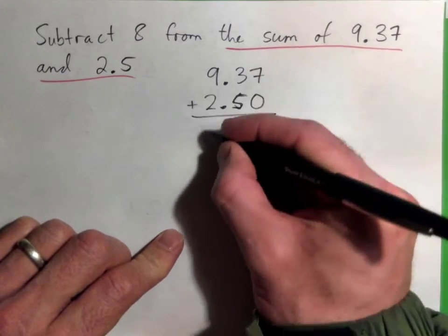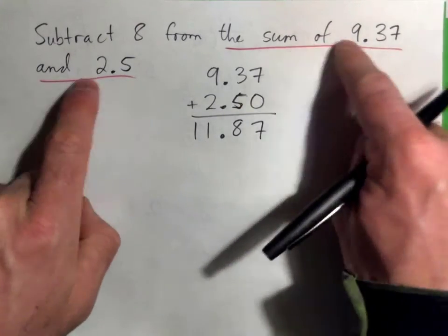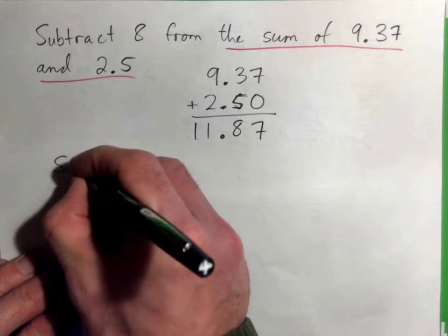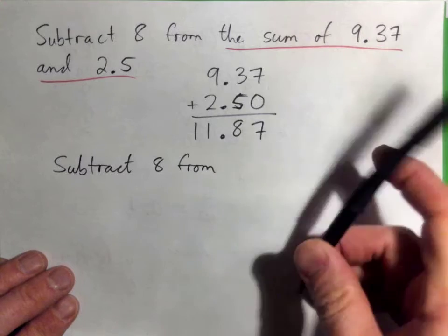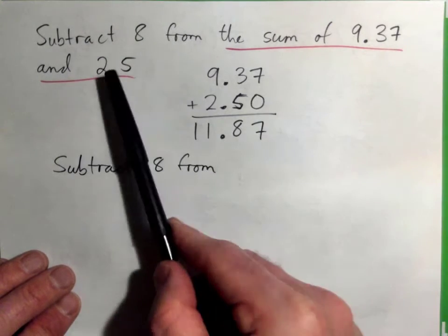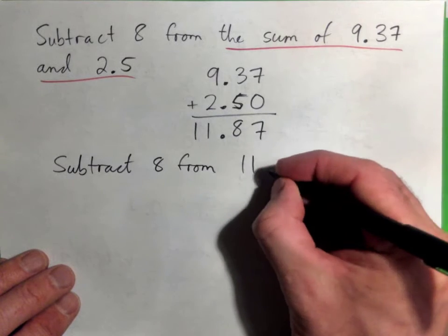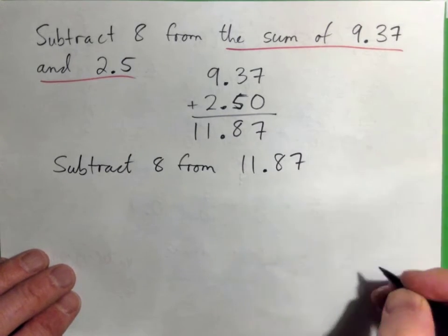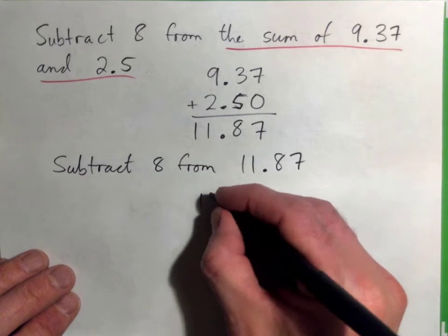Subtract 8 from—what's the sum of 9.37 and 2.5? 11.87. And so now we take the 11.87. I'm writing it all out. You guys don't have to write all this out. I'm the teacher, I'd like to write everything out. And I subtract 8 from that. The only thing is I need to write 8 as 8.00, right, so...